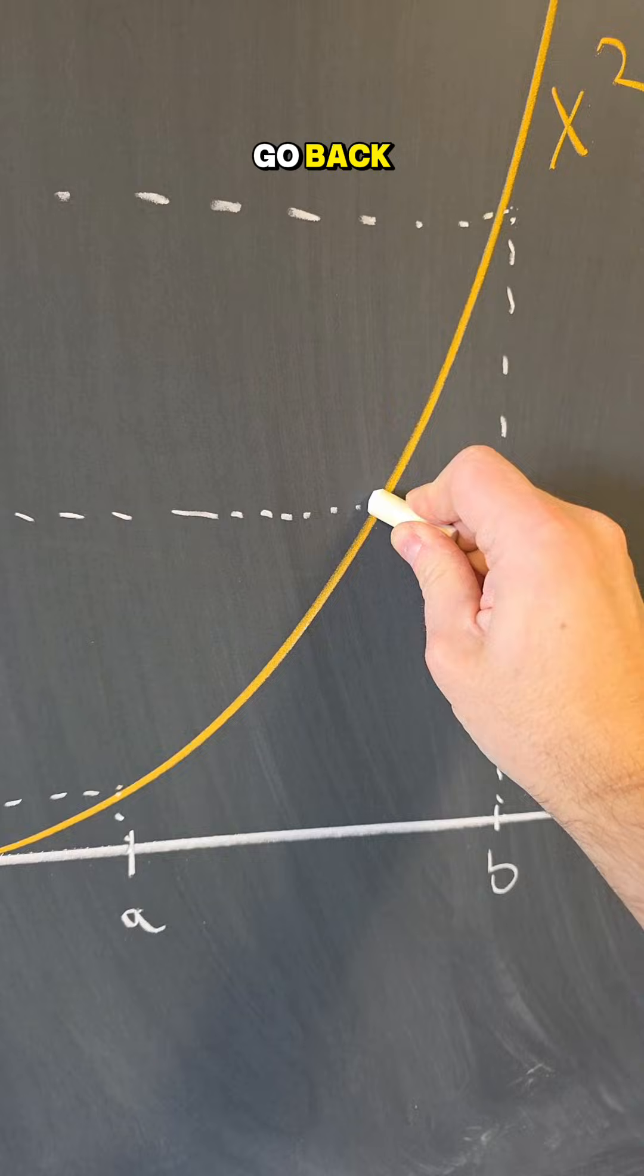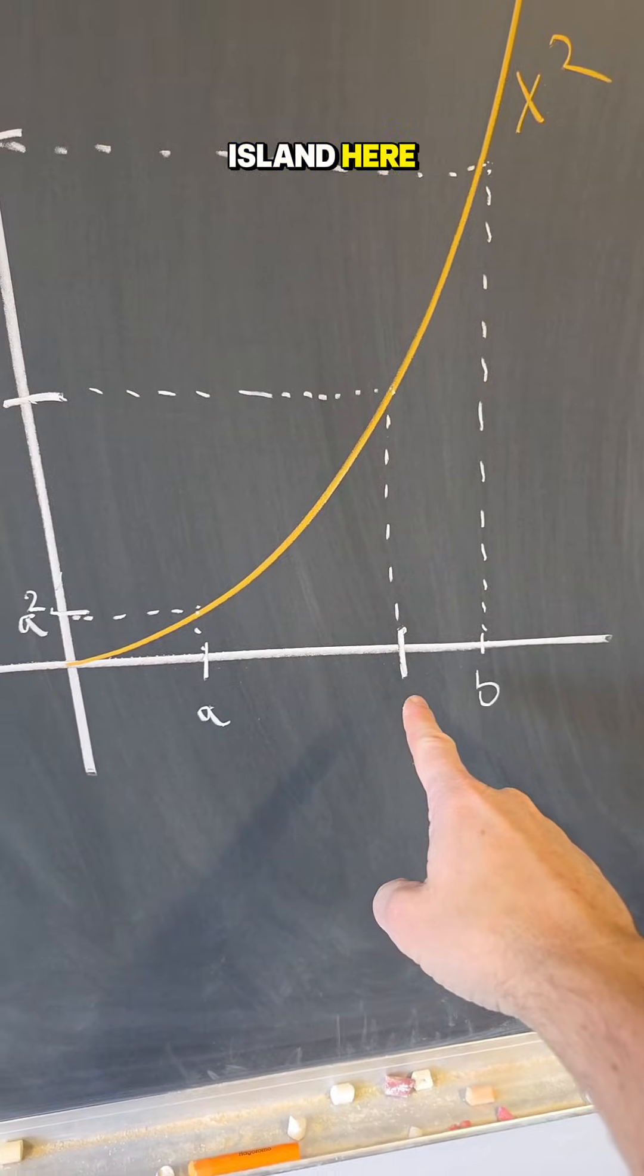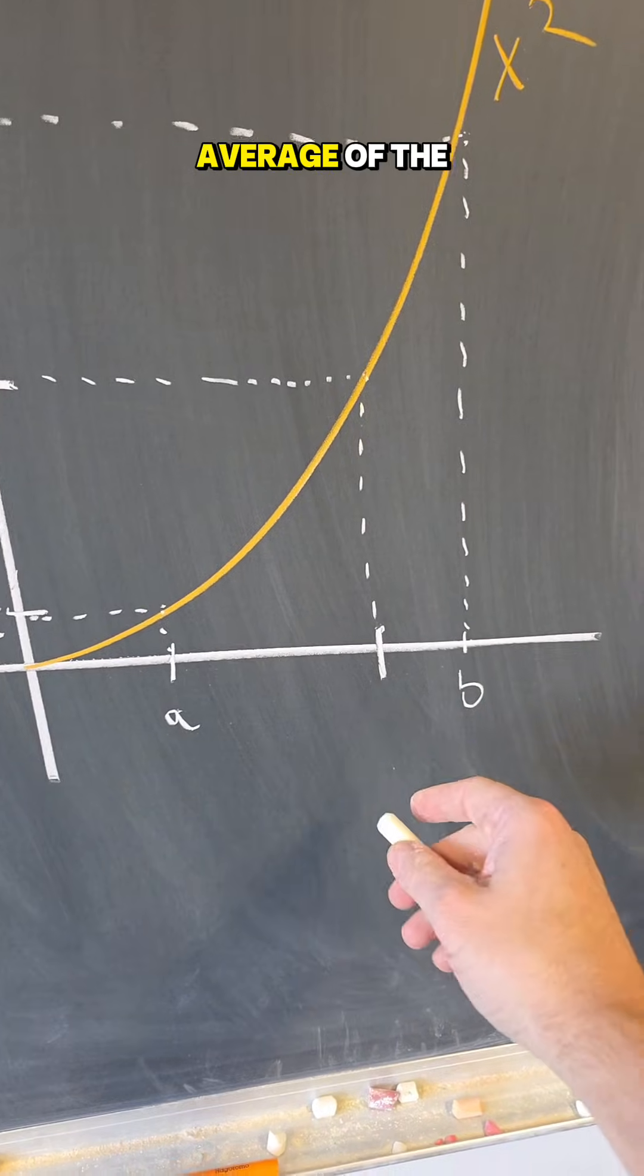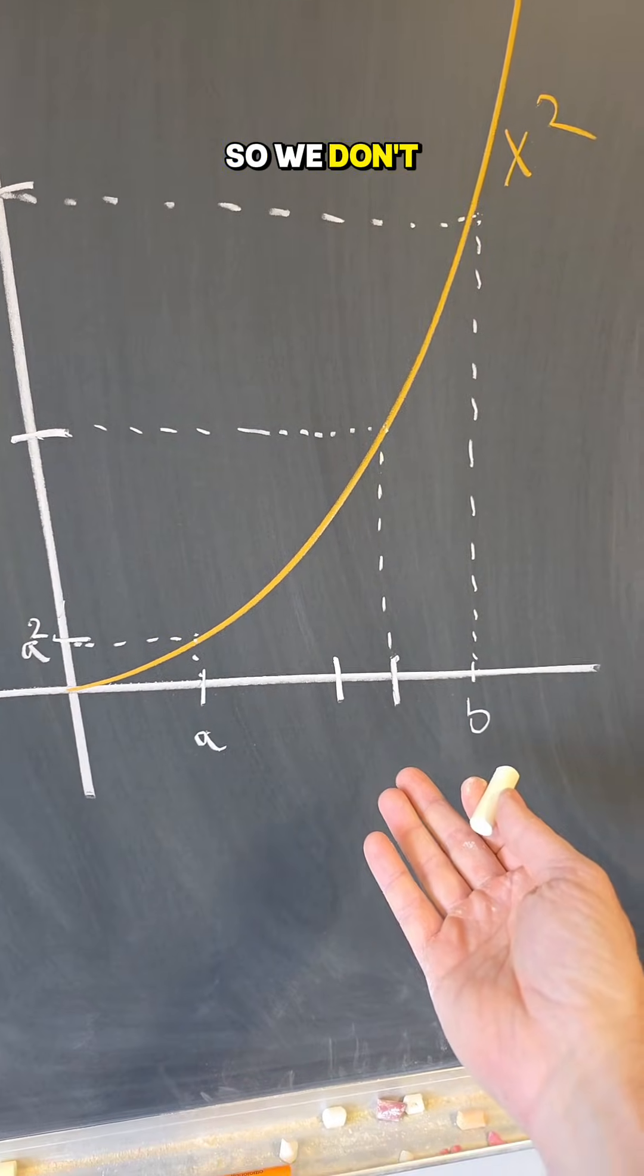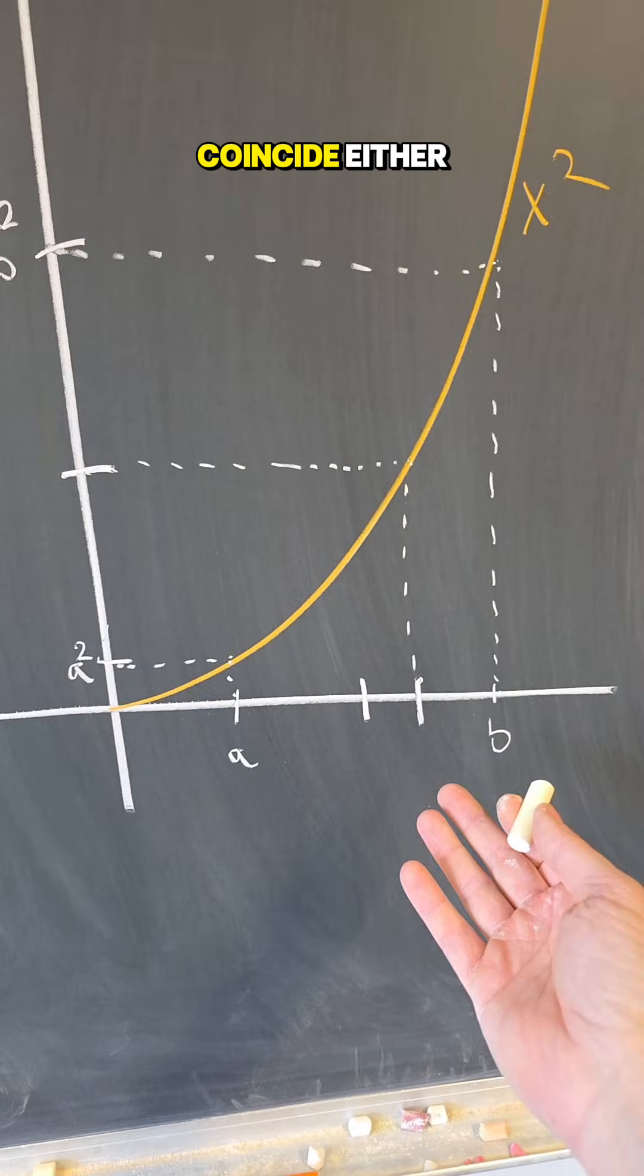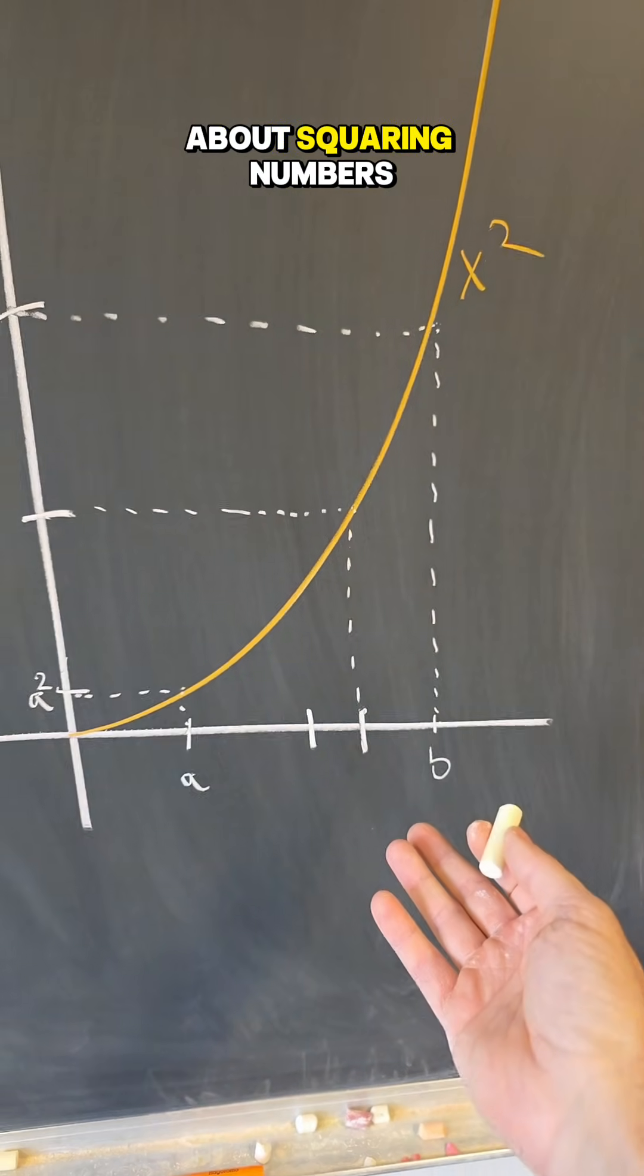So if I go back, I see that I land here, which is far off from the average of the two, which would be somewhere there. So we do not expect it to coincide either, those averages to coincide when we're talking about squaring numbers.